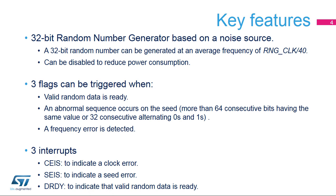The RNG verifies the randomness of the provided data. If more than 64 consecutive bits have the same value — 0 or 1 — or there are more than 32 consecutive alternating 0s and 1s, a seed error current status flag is set. A clock error current status flag is set if the RNG clock is less than HCLK divided by 16. An interrupt source can also be enabled to indicate an abnormal seed sequence or frequency error.